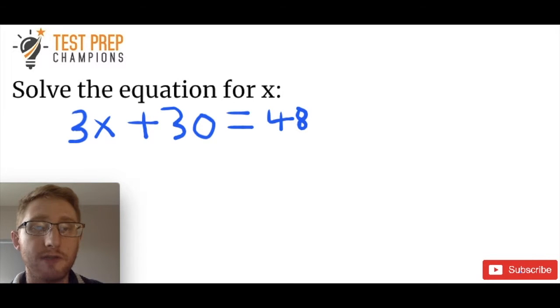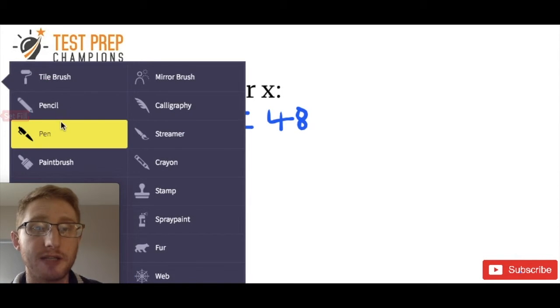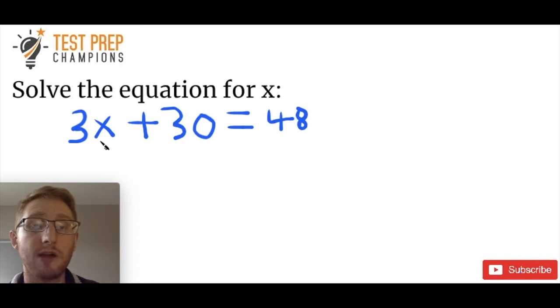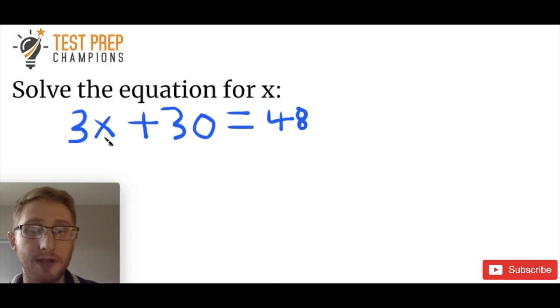This is a very fundamental skill for the GED test. The way it works is we want to get the variable by itself — and the variable is this x right here. So we get the x by itself on the left hand side of the equation and we've got the problem done.